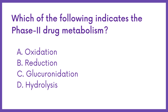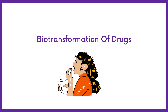Which of the following indicates phase 2 drug metabolism? Option A: Oxidation. Option B: Reduction. Option C: Glucuronidation. Option D: Hydrolysis. The biotransformation of drugs occurs in two ways.